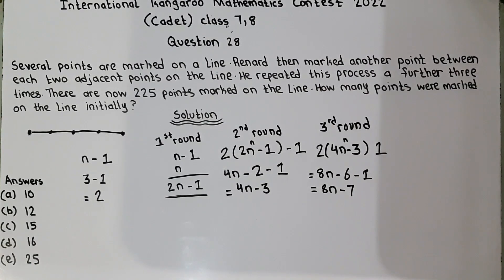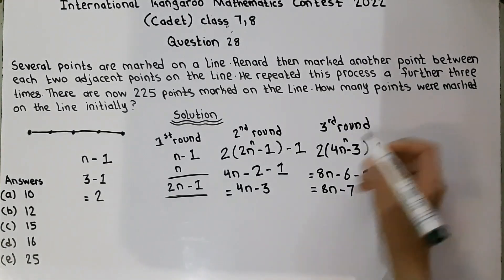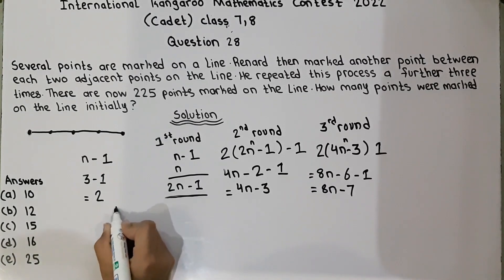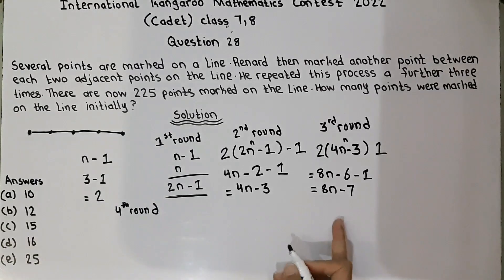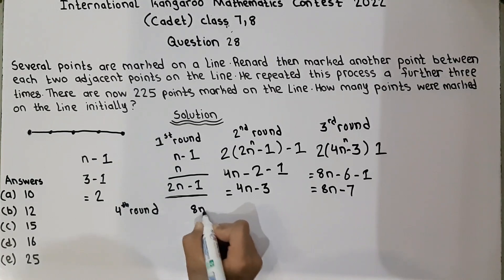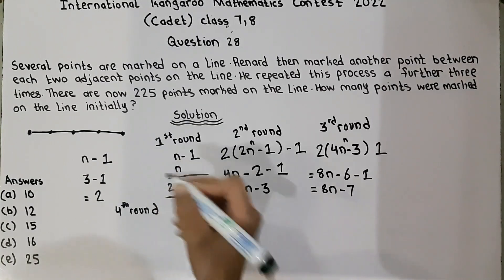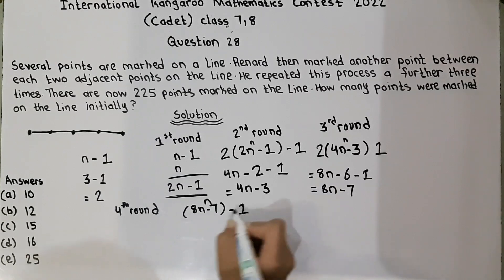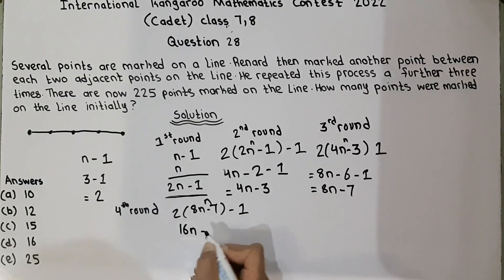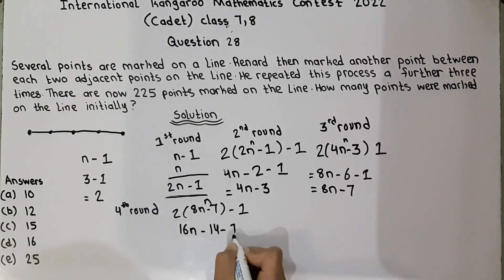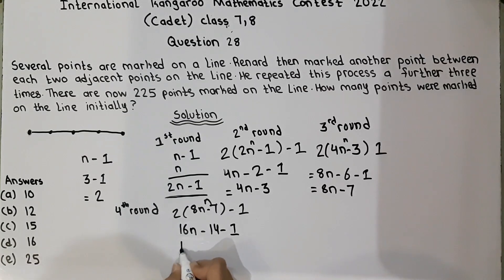Now we will do the fourth round. We have eight n minus seven. Applying the formula n minus one again: eight times two gives sixteen, and minus seven becomes minus fourteen, then minus one. This gives sixteen n minus fourteen minus one, which equals sixteen n minus fifteen.